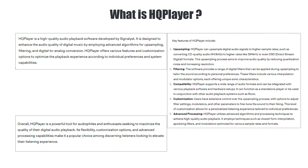So what is HQ Player? HQ Player is a high quality playback software developed by Signalist. It was designed to enhance the audio quality of digital music by using advanced algorithms for upsampling, filtering, and converting digital to analog audio. It offers various upsampling methods — you can convert your CD quality audio to higher bit rates of PCM, and even convert it to DSD. They also offer different kinds of filters which can be used while you upsample the audio to tailor the sound according to personal preferences.